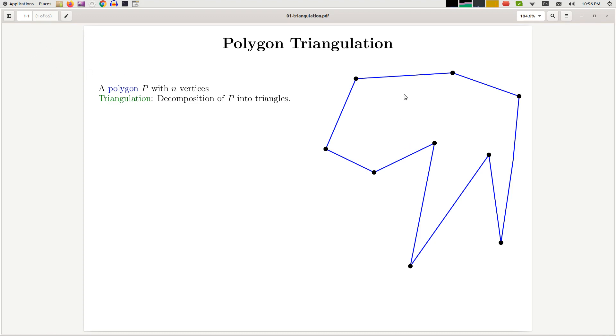We have given a simple polygon with n vertices and n edges, and we want to decompose it into a bunch of triangles. Note that this decomposition into triangles is not necessarily unique.